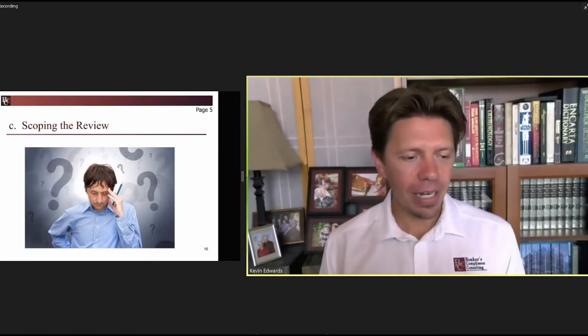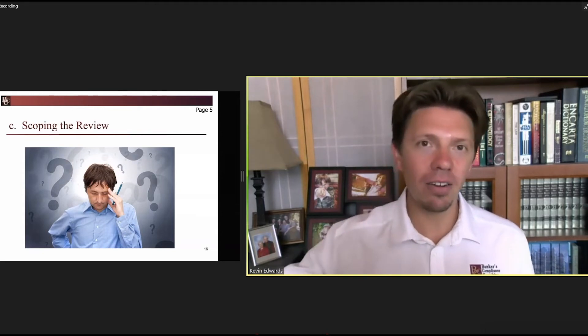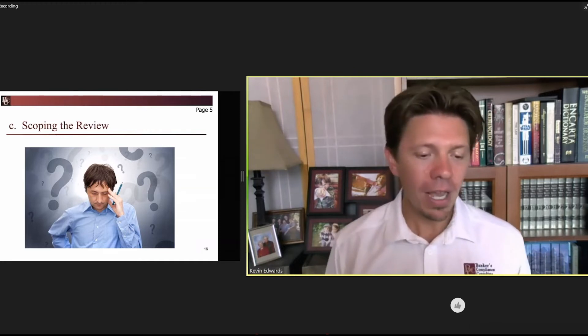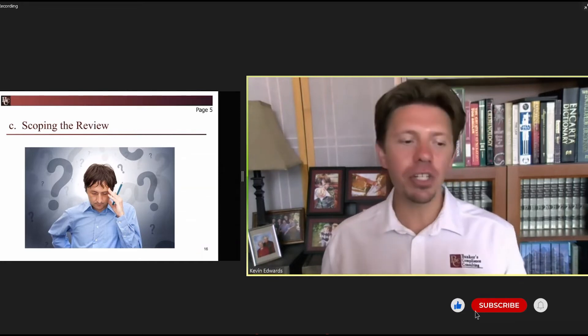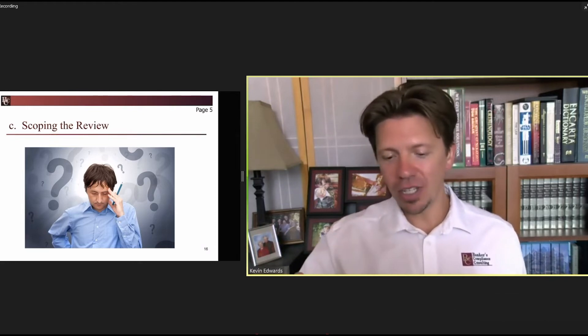If you go to page five, the next page, there's really a good checklist there on things that you should be evaluating when you're determining the scope of your review, what to look at, and how much of each individual item you're going to be looking at. So there's a list there.